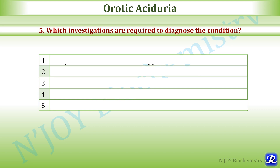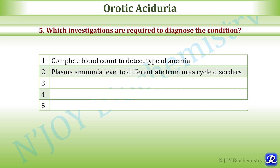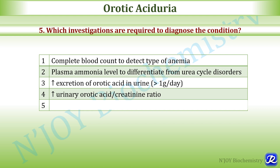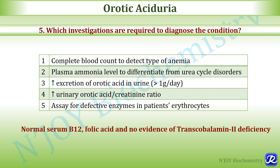The fifth question is: which investigations are required to diagnose the condition? CBC (complete blood count) is done to detect the type of anemia. Plasma ammonia level is measured to differentiate from urea cycle disorder, since orotic aciduria can be secondary to ornithine transcarbamylase deficiency. There will be increased excretion of orotic acid in urine — more than 1 gram per day — and increased urinary orotic acid to creatinine ratio. Enzyme assay for defective enzymes in the patient's erythrocytes confirms the diagnosis. Normal serum B12 and folic acid with no evidence of transcobalamin 2 deficiency also support the diagnosis.